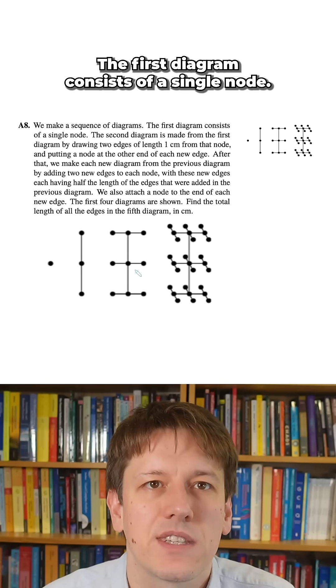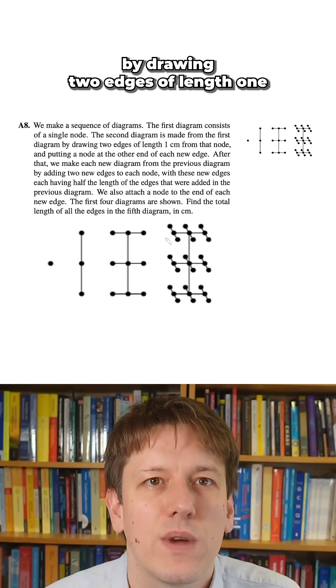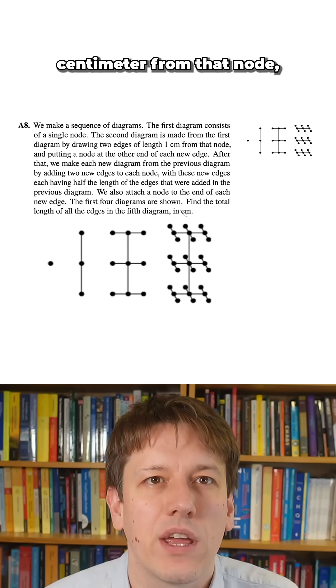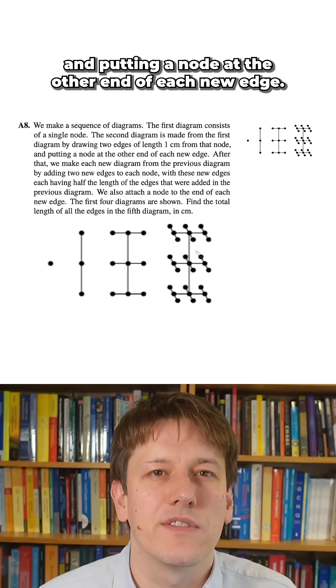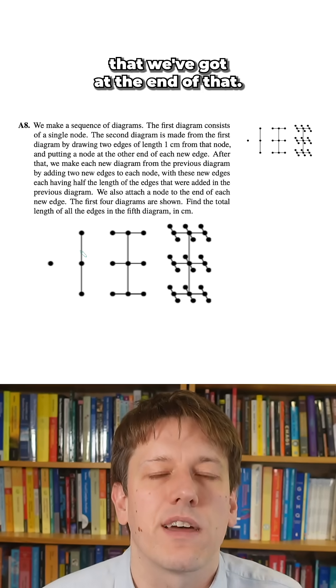The first diagram consists of a single node. The second diagram is made from the first diagram by drawing two edges of length one centimeter from that node and putting a node at the other end of each new edge, so you can see the second diagram is just this vertical straight line that we've got at the end of that.